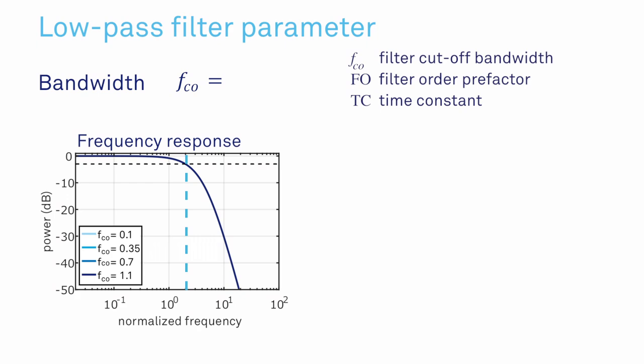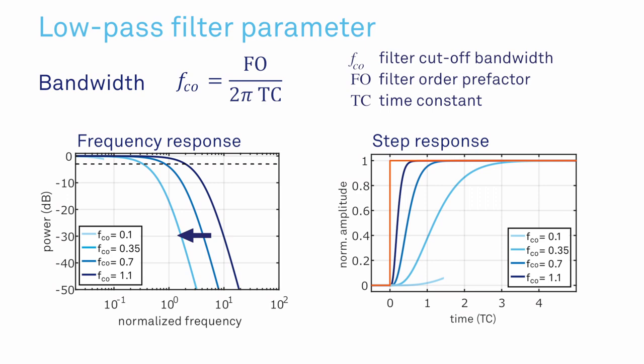The low-pass filter is defined by two parameters: bandwidth and order. The bandwidth indicates the cutoff frequency and is inversely related to the time constant. Lower bandwidths give more signal-to-noise ratio but increase the acquisition time.